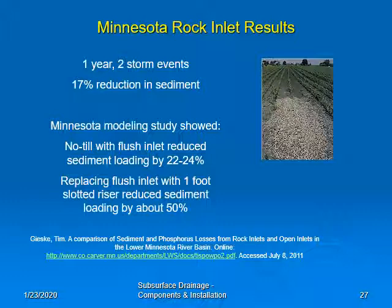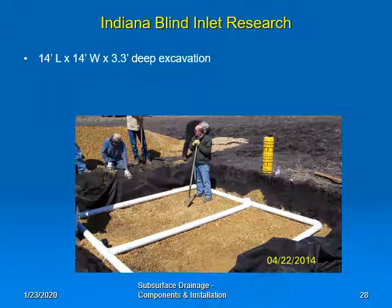One concern with rock inlets or blind inlets is that sedimentation will cause them to plug. ARS scientists in Indiana have conducted research on a blind inlet that is more likely to meet the NRCS 620 standard. This and the following photos are from an installation in Harding County, Iowa in April of 2014. This site will be monitored so we should be getting some good data on the performance of these blind inlets in a few years. The design of this blind inlet was based exactly on the blind inlets used by ARS scientists in Indiana during their research.